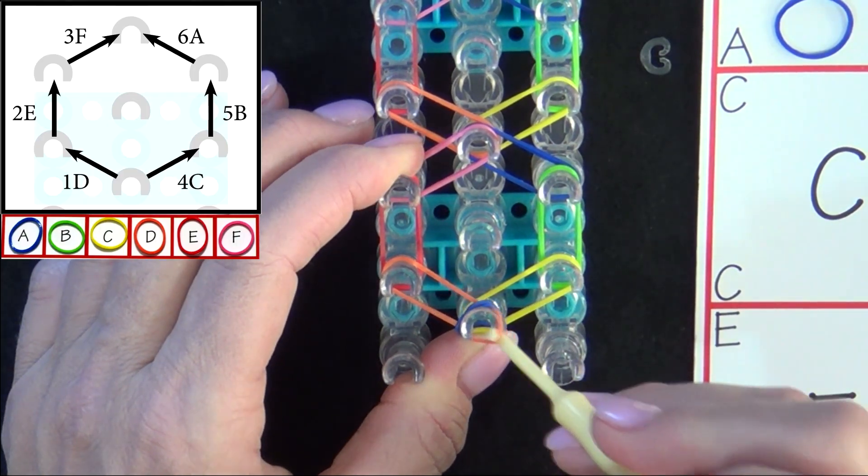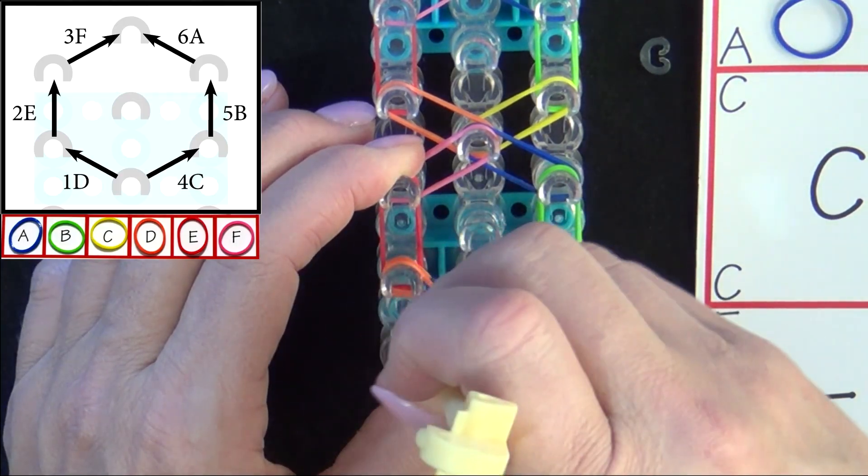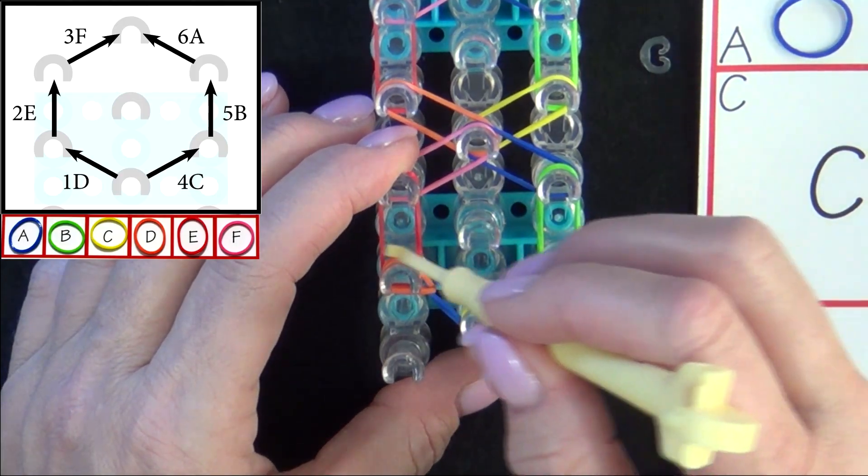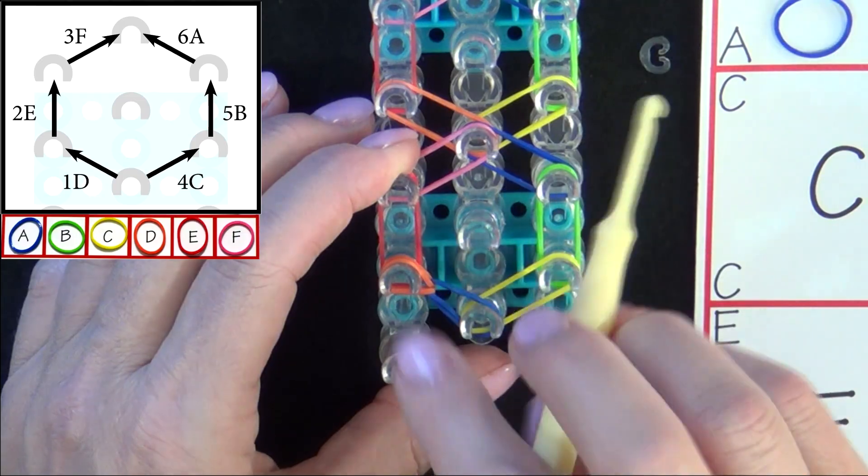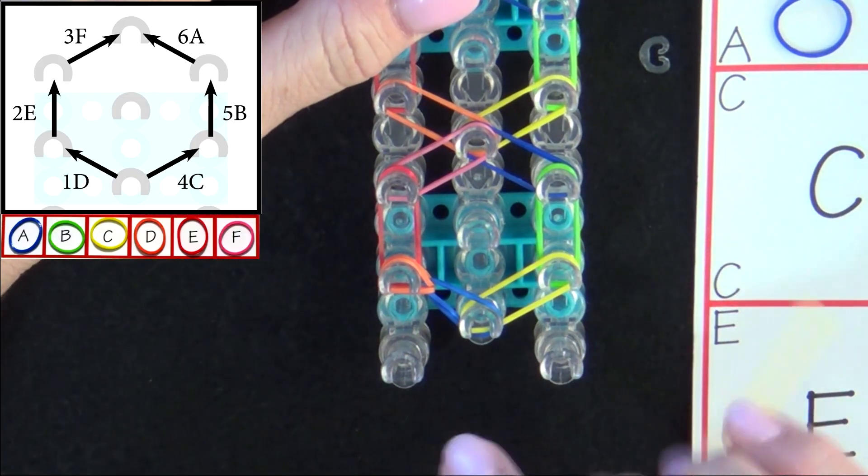Hold the cap band down with your thumb and loop the band out to the left. Notice how it made this teardrop shape. That shows you that you grabbed the right band.